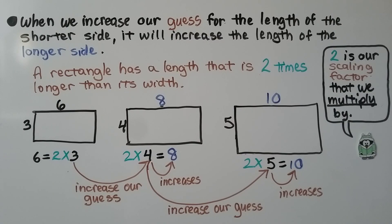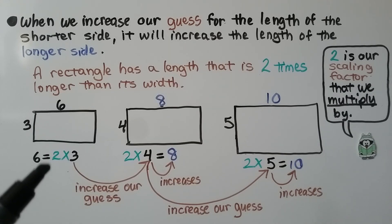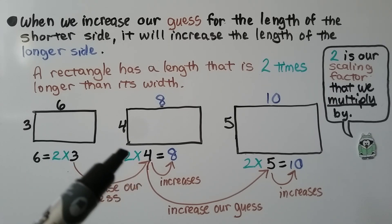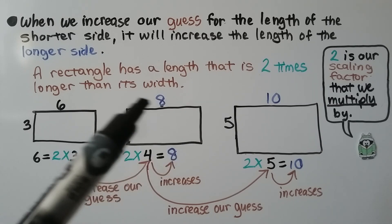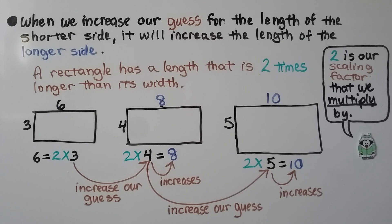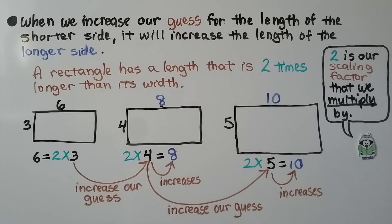When we increase our guess for the length of the shorter side, it increases the length of the longer side. A rectangle has a length that is two times longer than its width. If the shorter side is three, two times that is six. If we increase our guess to four, two times four is eight. Increasing four to five gives ten. Two is our scaling factor that we multiply by.